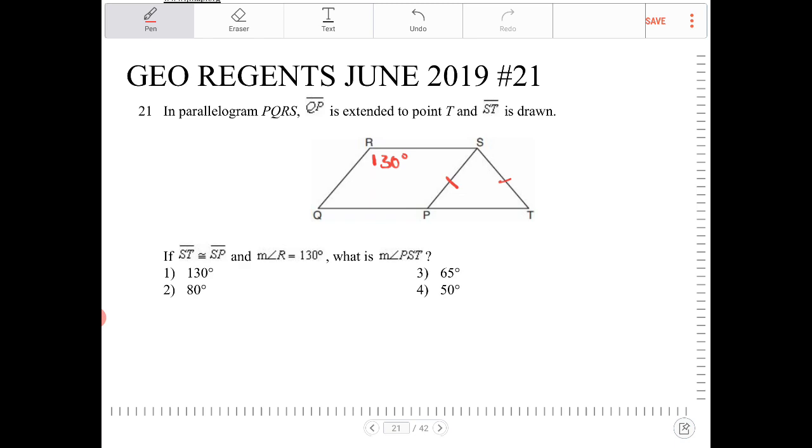So PQRS is a parallelogram. Therefore, if SP is congruent to ST, I also know that QR will be congruent to those lengths. I also recognize that the opposite sides of a parallelogram are congruent.